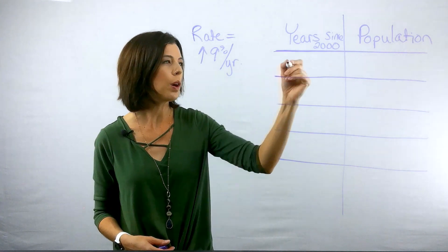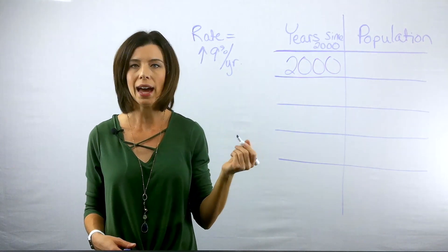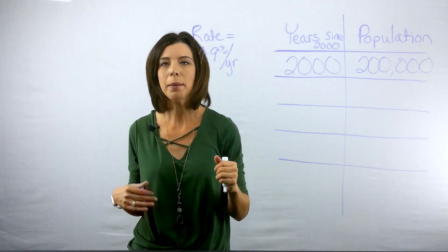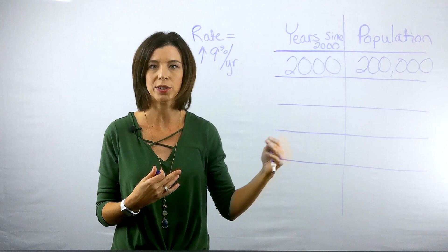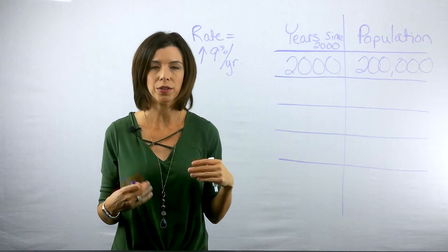Let's first start with what we know about 2000. So in the year 2000, we had 200,000 people. So in the next year, I can think about that I'm actually going to be adding on to my 200,000. So it's really 200,000 plus 9% of the 200,000.